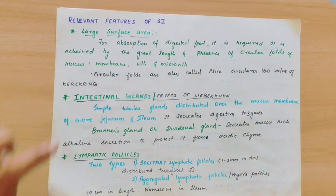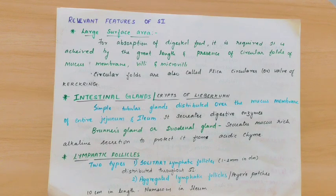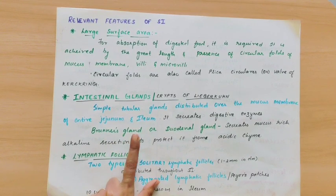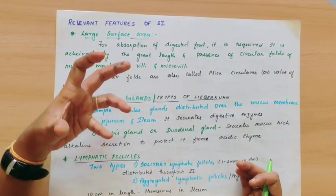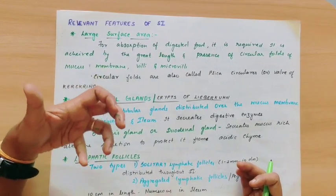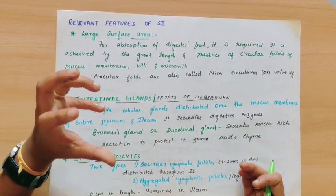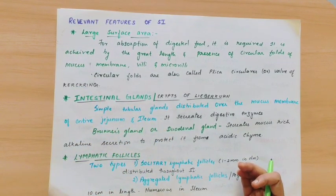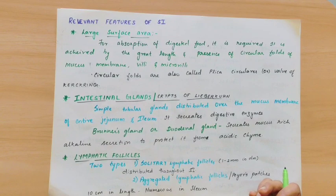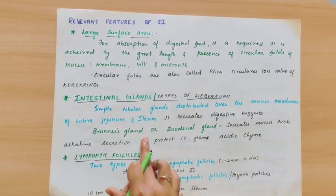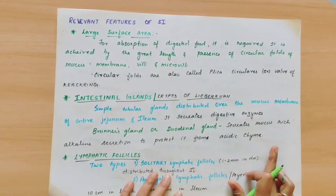Now coming to the intestinal glands. Intestinal glands are present in the small intestine for the secretion of digestive enzymes. The mucus membranes of the small intestine have glands present. Brunner's glands are present in the duodenum. They secrete mucus-rich alkaline secretion to neutralize the acidic chyme coming from the stomach. So that is Brunner's gland's function — to protect the duodenum from acidic chyme.